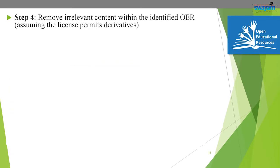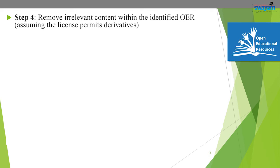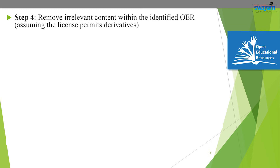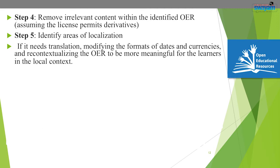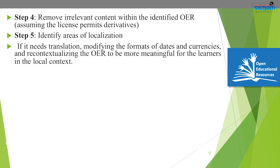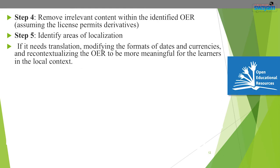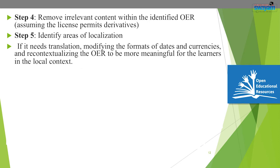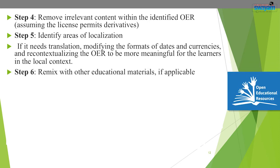The next step is to remove irrelevant content within the identified OER, being aware that you need to confirm the license permits this derivative. Following that, identify localization needs — translation, modifying formats such as dates or currencies, and recontextualizing the OER to be more meaningful for learners in a local context. The next step is then remixing with other educational materials.